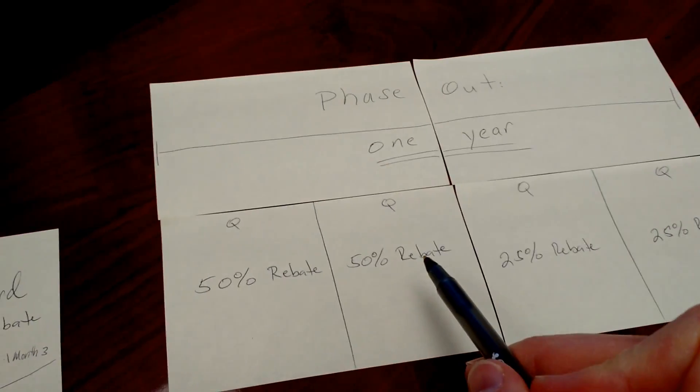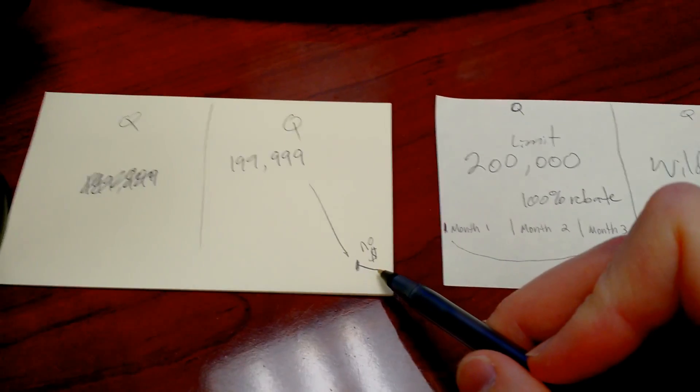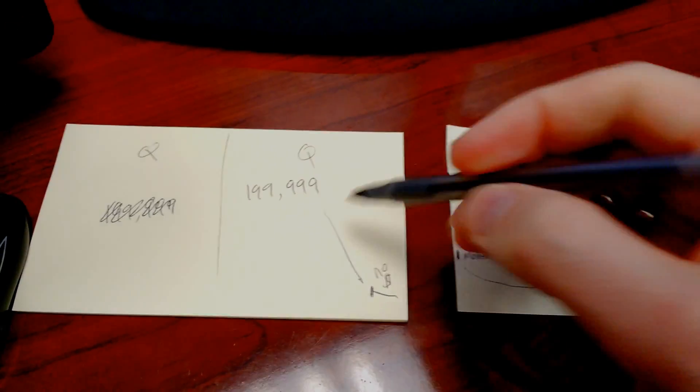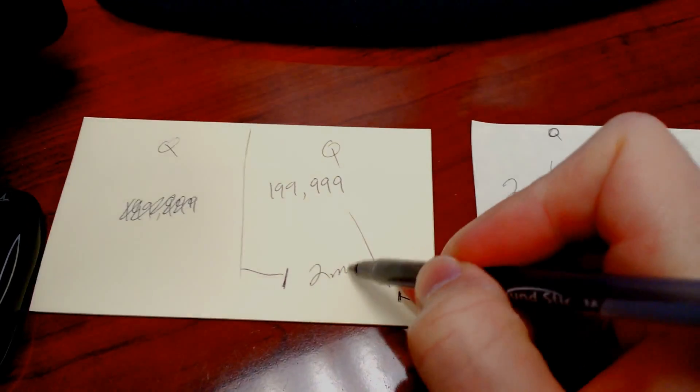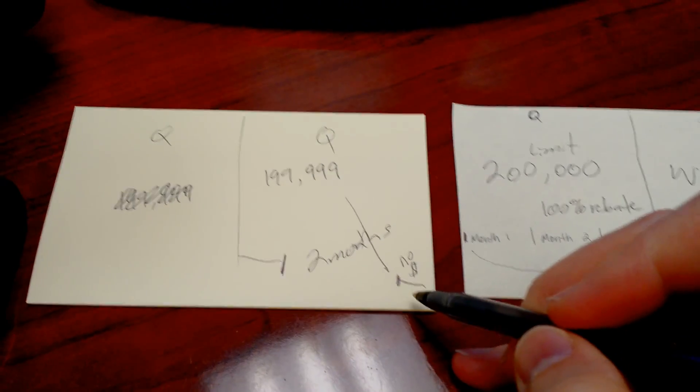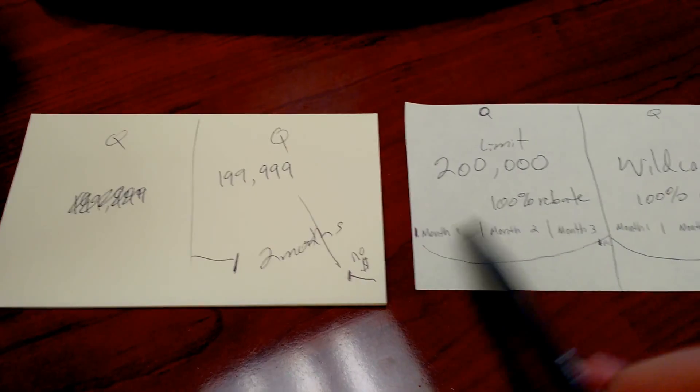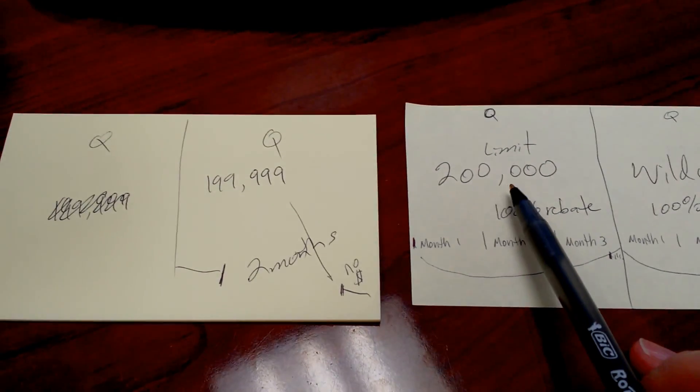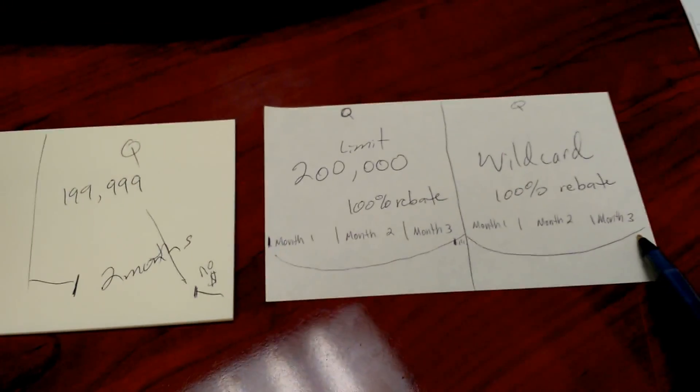What would have to happen is that Tesla would not sell any vehicles at the end of this quarter. Maybe they reached it even early in the quarter, so maybe they go two months or something with no sales in order to maximize the number of electric vehicles that they can push out during their limit quarter and then their wildcard quarter.